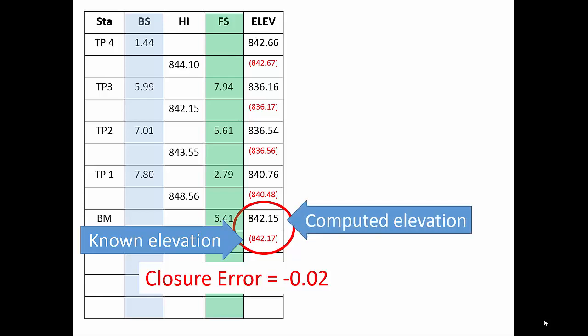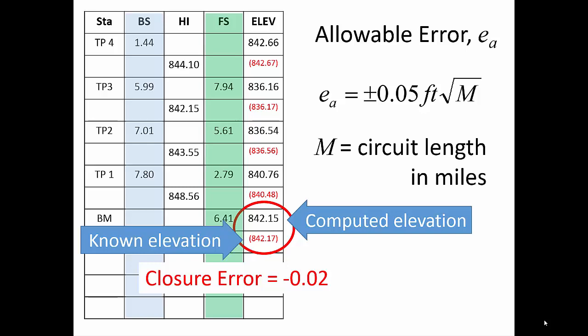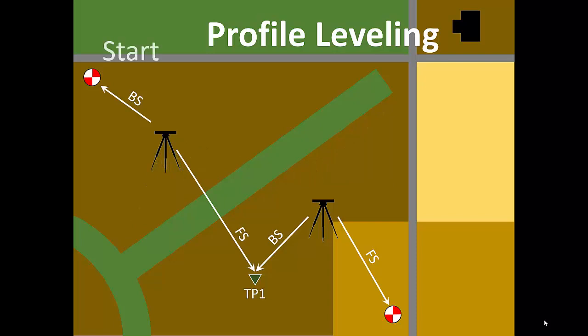To evaluate the quality of the work, we compare that circuit closure error to the allowable error. The allowable error depends on the horizontal length of the circuit from the starting benchmark through each turning point to the ending benchmark.